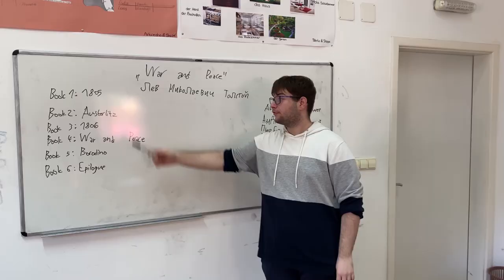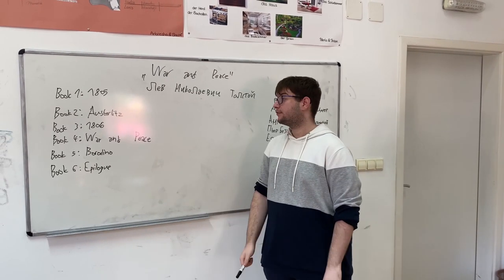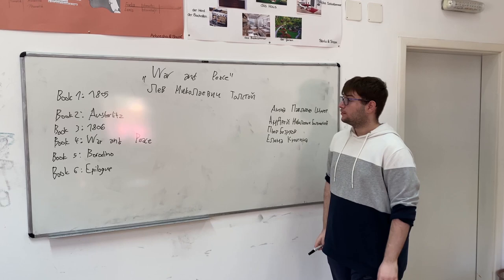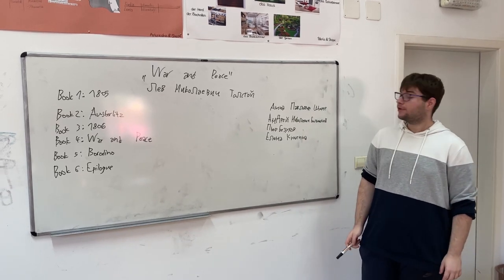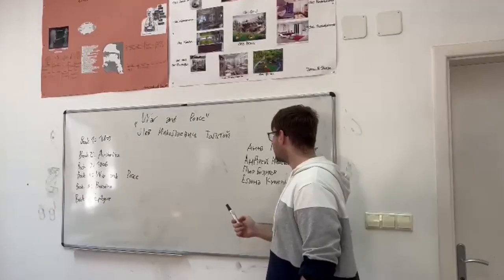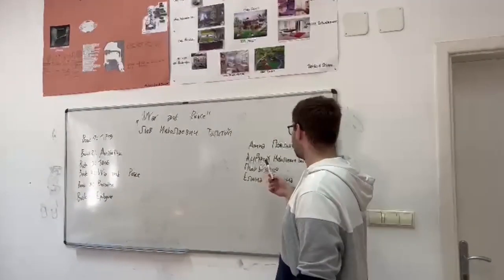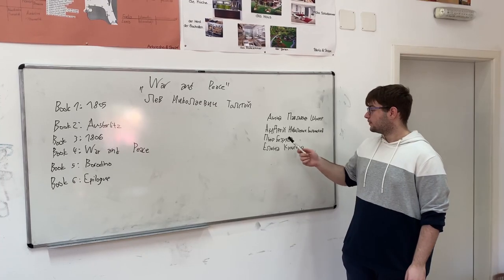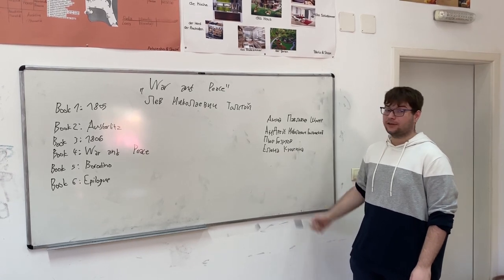First, we start in the first book in 1805. This is centered in Russia, at an aristocratic party hosted by Anna Pavlovna Shirev, where we also meet the titular characters: Prince Andrei Nikolaevich Volkonsti, Pierre Rezovov, and Gilead Gouradina.